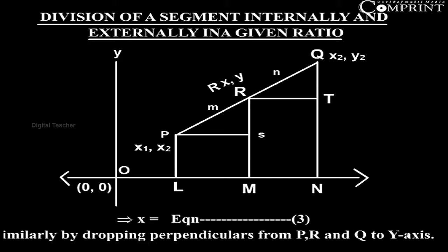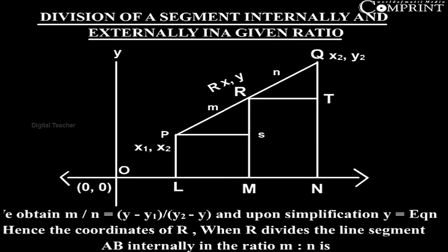by dropping perpendiculars from P, R and Q to Y-axis, we obtain m/n = (y - y₁)/(y₂ - y), and upon simplification y = (my₂ + ny₁)/(m + n).